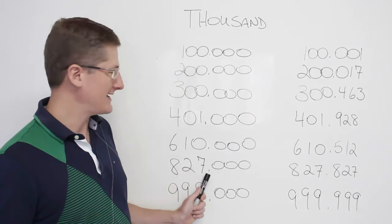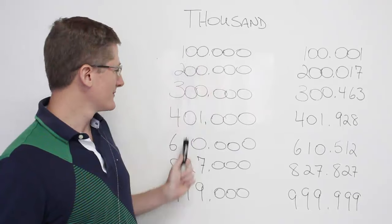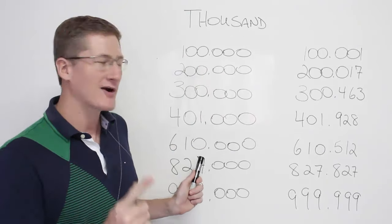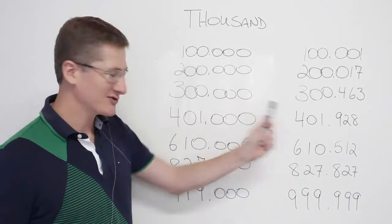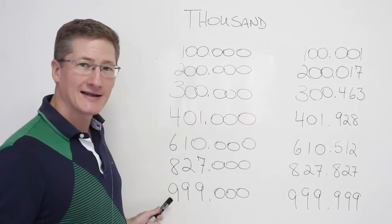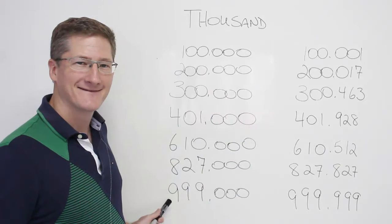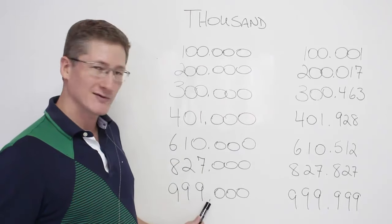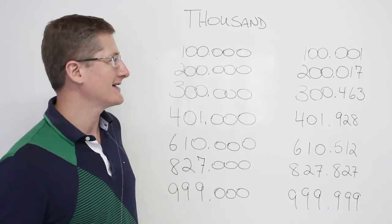827,000. Remember, if you don't remember the numbers, the hundreds, go back, watch that video and practice if you need some extra help here. And finally, we have, that's it, 999,000. So where the comma is, you say thousand.